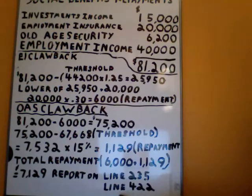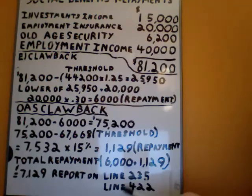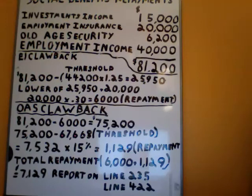That $7,129 is what would be reported on line 235 as a social benefits repayment deduction on your T1 income general tax return. We must also reflect the same amount on line 422 of your T1 general Canadian income tax return, because that is what is actually being paid on top of your calculated federal and provincial income taxes. So at the end of the day, the taxpayer would be paying his federal tax, his provincial tax, and his social benefits repayments.